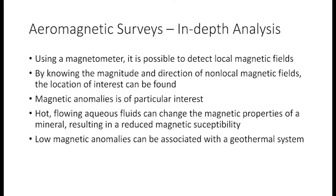By knowing the magnitude and direction of the non-local magnetic fields — such as the Earth's poles or the solar-wind magnetic fields — we can find the location of interest for a geothermal fluid. These magnetic anomalies are of particular interest. When you have a hot flowing aqueous fluid, it can change the magnetic properties of minerals, resulting in a reduced magnetic susceptibility. This makes it harder to detect, but it's these low magnetic anomalies that are associated with a geothermal system.